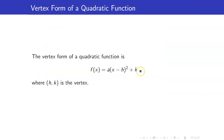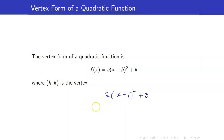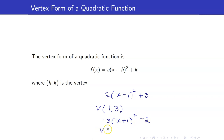We can also talk about the vertex form of a quadratic function, written as a times (x minus h) squared plus k, where (h, k) is the vertex. The nice thing about vertex form is that you no longer have to compute the vertex using the formula. For example, if you have 2(x minus 1) squared plus 3, the vertex is (1, 3). If you have negative 3 times (x plus 1) squared minus 2, note that x plus 1 is x minus negative 1, so h is negative 1 and the vertex is (negative 1, negative 2).